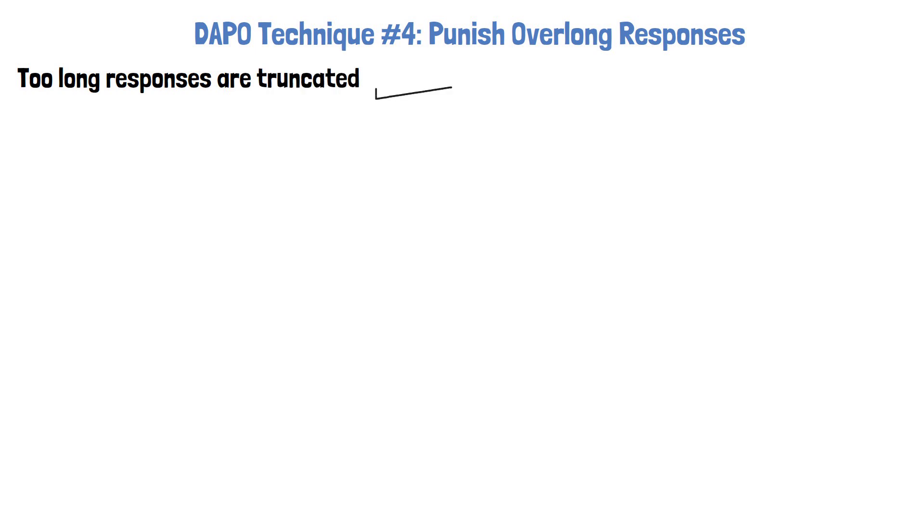Let's move on to the fourth technique that DAPO introduces, called overlong responses punishment. In reinforcement learning, a maximum response length is usually set, and overlong responses are truncated. When this happens, the reward for the response is negative since the model didn't reach the final answer.